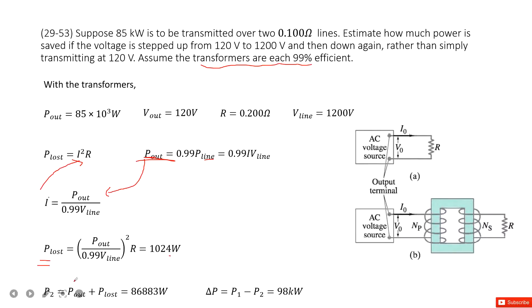We can calculate using P_out plus P_lost. The answer is there. So now the delta P is the energy saved. So use P₁ minus P₂. You get it: 98 kilowatts. Thank you.